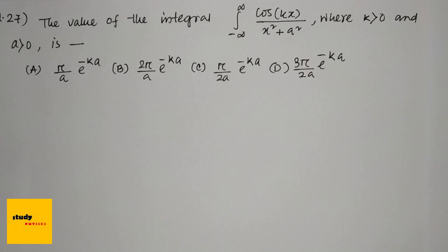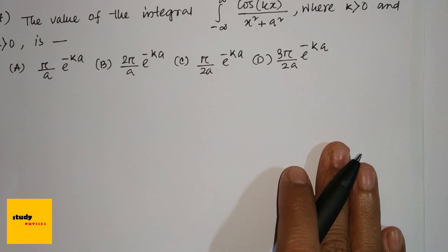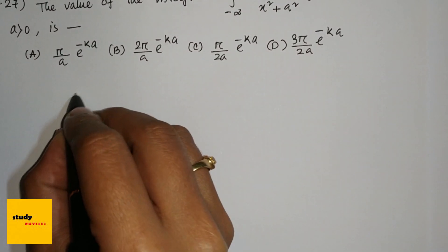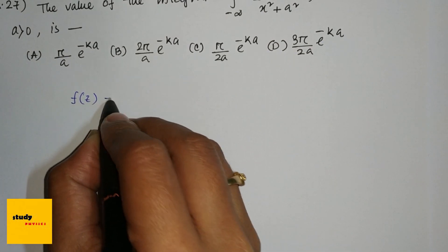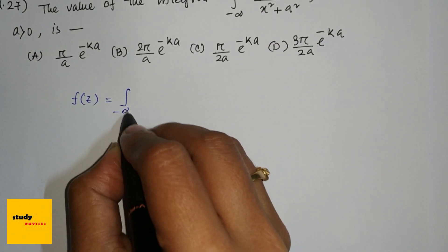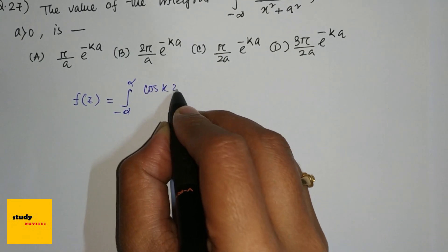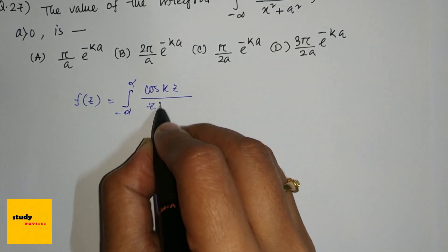This is a complex integral, so we can write this as f(z) equals the integral from minus infinity to plus infinity of cos(kz)/(z² + a²).